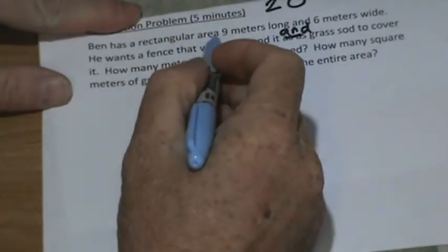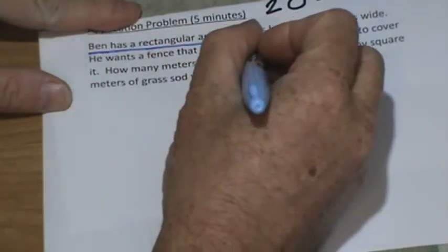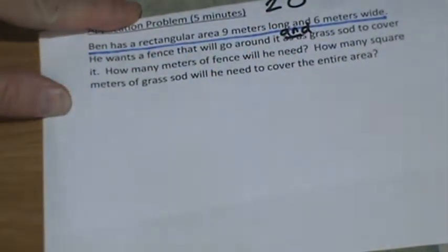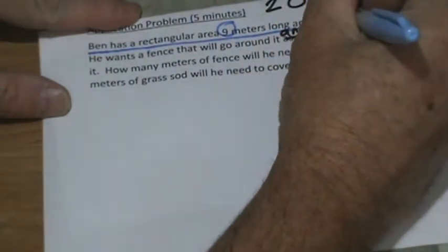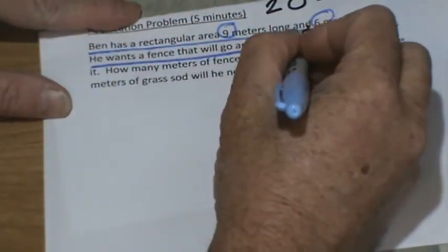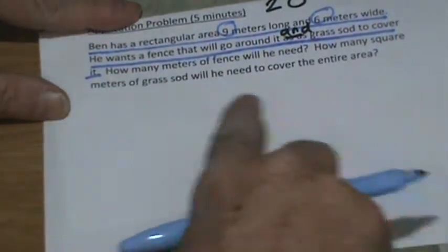Ben has a rectangular area nine meters long and six meters wide. I'm going to underline this because this is something we know. So what two numbers do we have involved here? We have nine and six. What else happens here? He wants a fence that will go around it and grass sod to cover it.